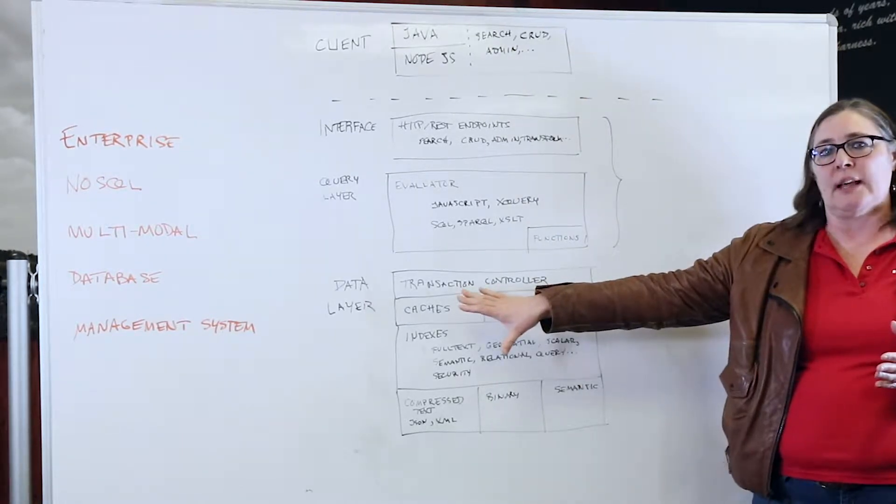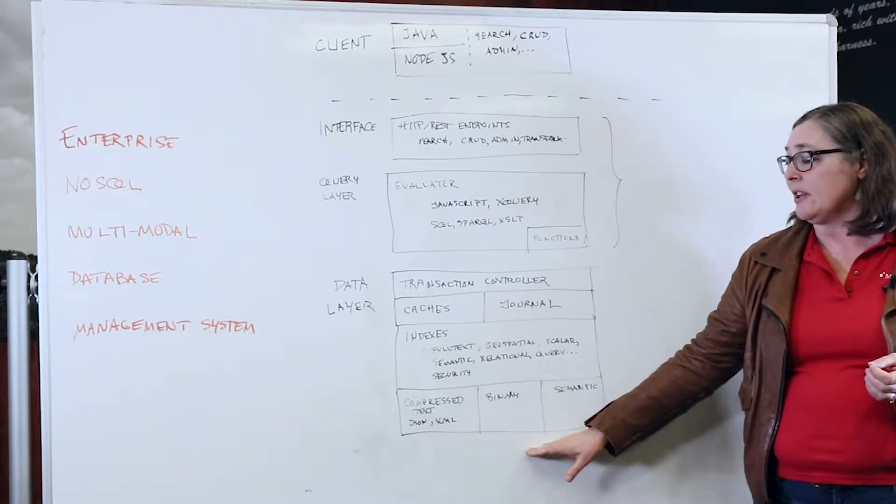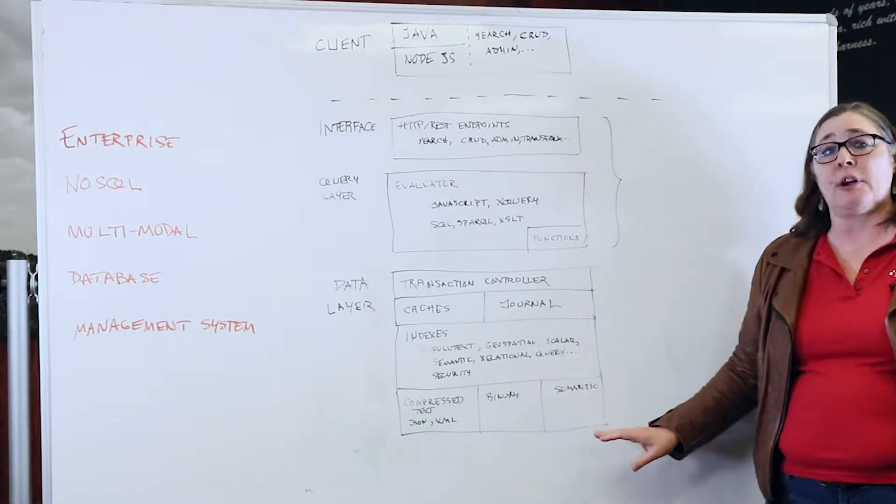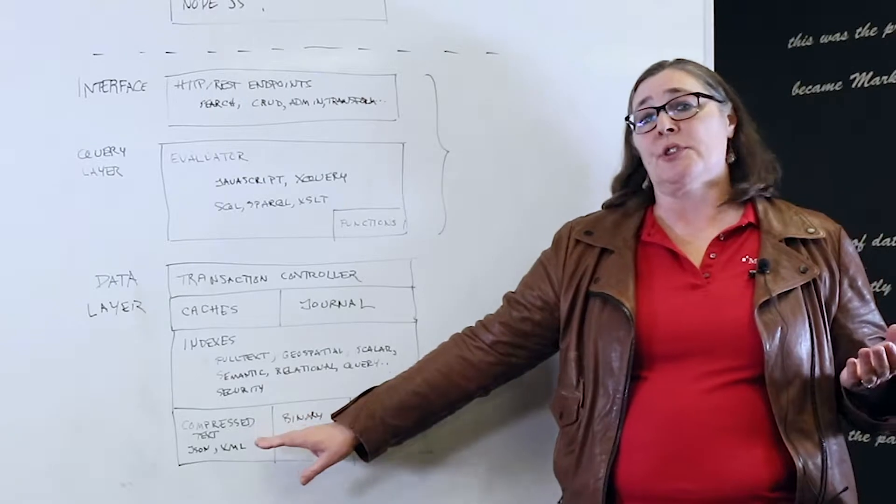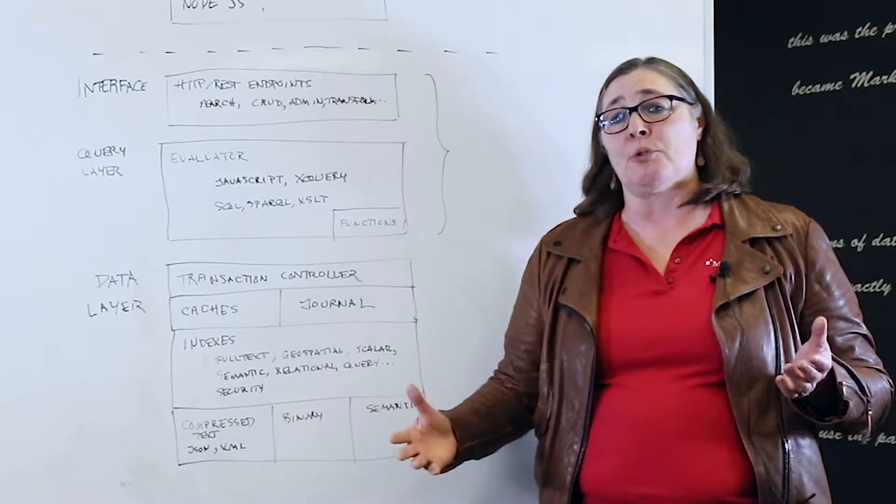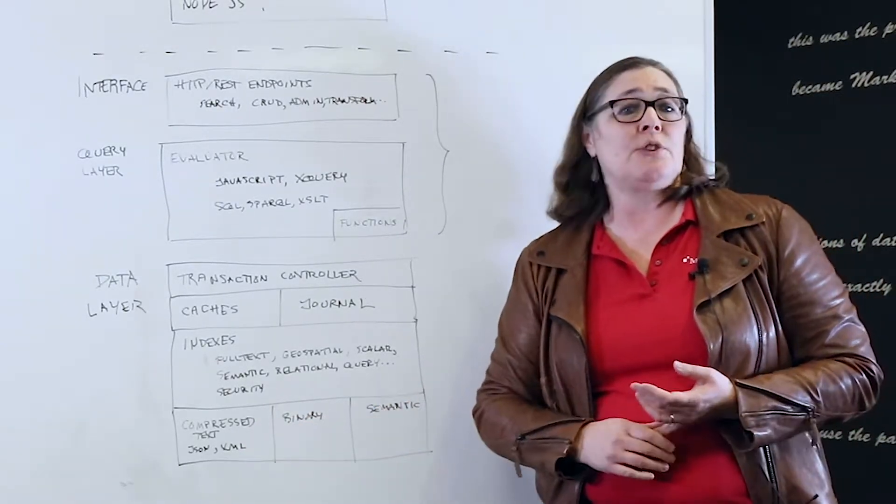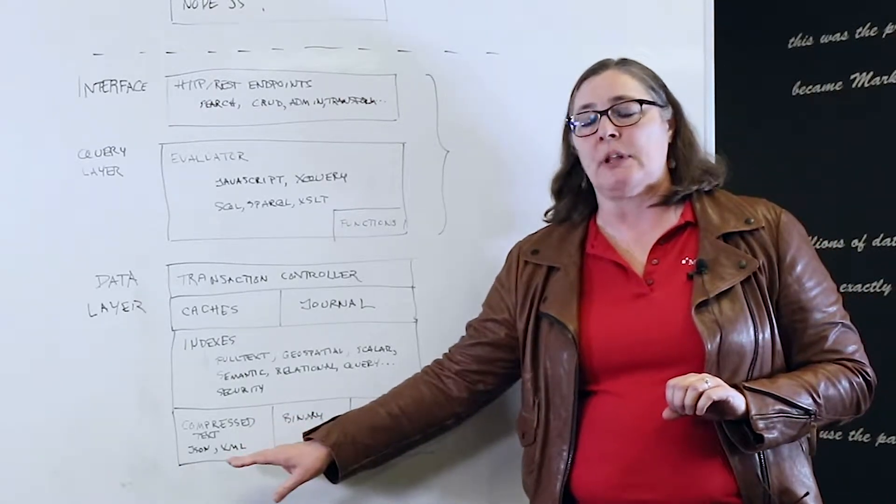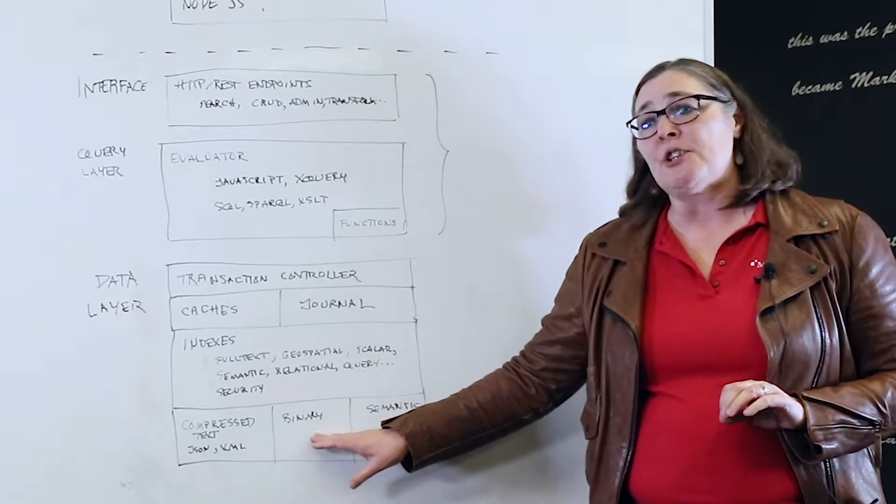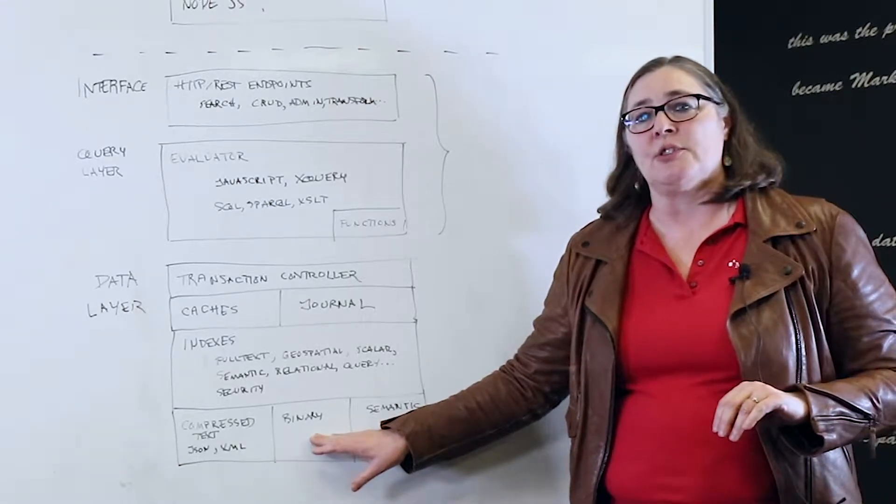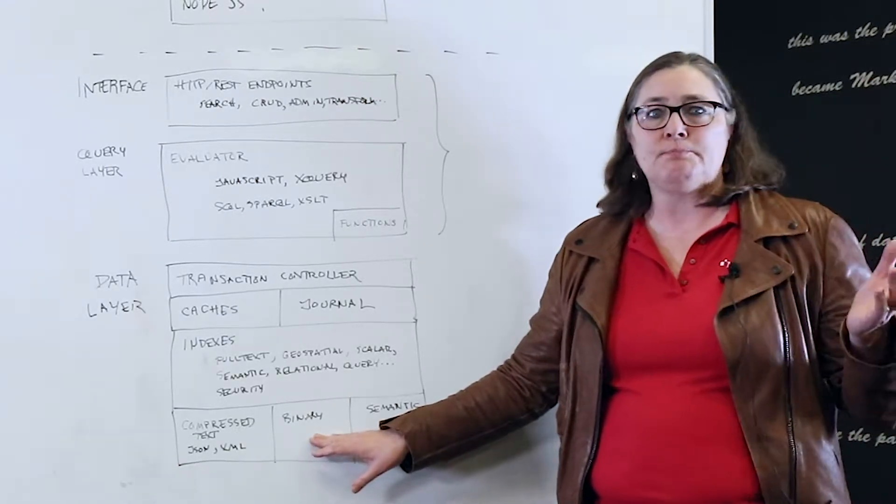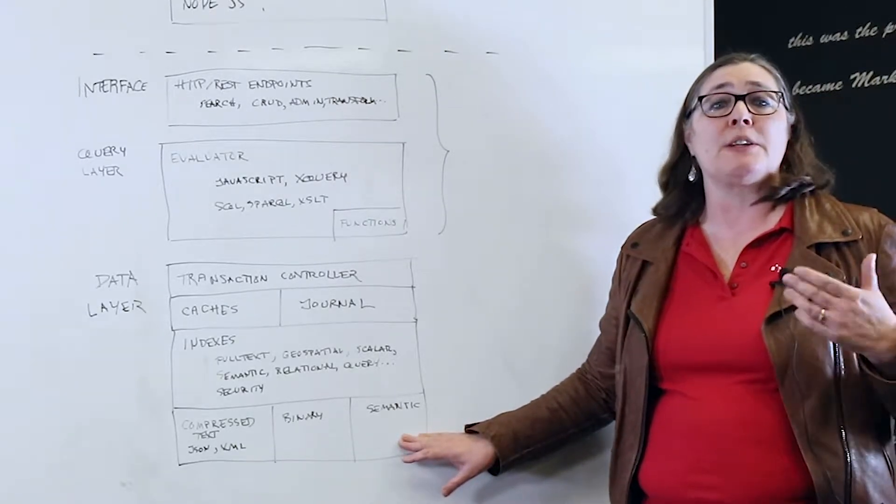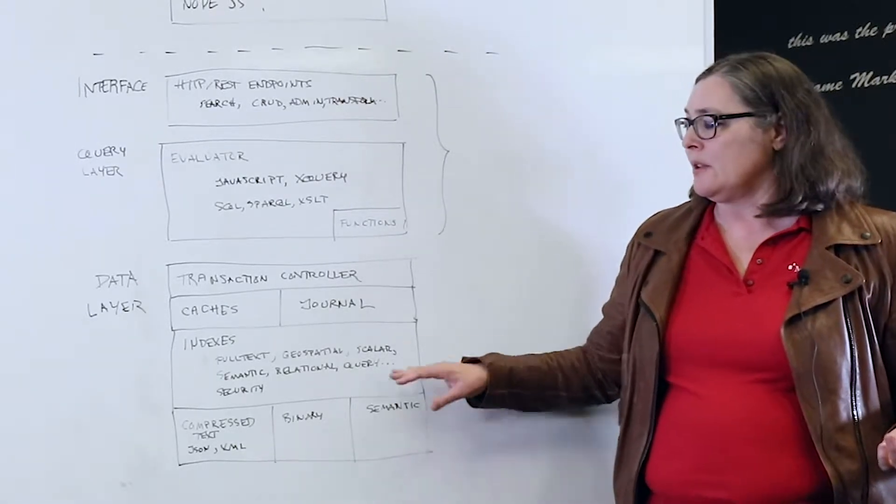At the bottom is the data layer, and at the base of that is the storage system. We're multimodal, so there's actually several different kinds of storage. There's the compressed text storage, where we store the text format documents such as XML or JSON, and we understand the structure of those documents as well at this level. There's binary storage for your binary assets, such as images or videos. And then semantic storage for semantic triples, semantic relationships.